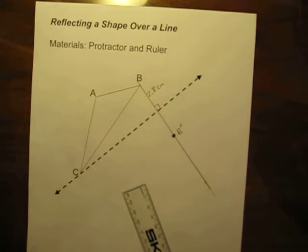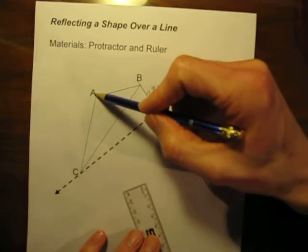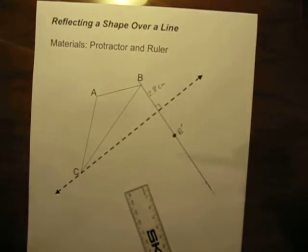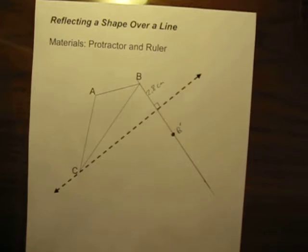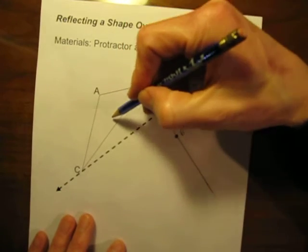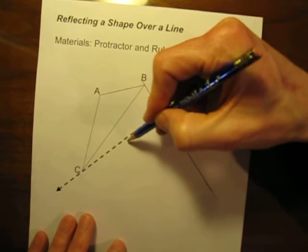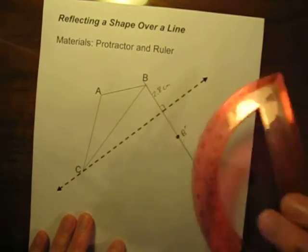So we're actually halfway done now. All I need to do is I need to do the exact same steps for point A, and then I connect my new points, and we have our reflection. So, let's just do it again, exactly as we did before. Step 1. We need a line that goes from A that crosses the reflection line at a 90 degree angle. In other words, it is perpendicular to the line of reflection.